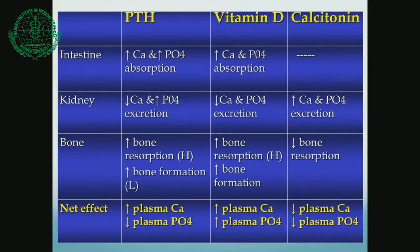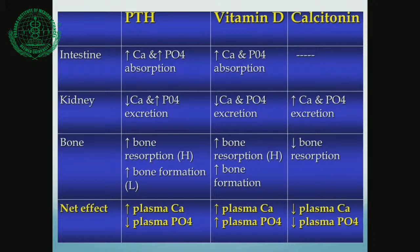Vitamin D increases calcium and phosphorus absorption from the intestine. It also decreases calcium and phosphorus excretion from the kidney, which is different from parathyroid hormone in that PTH selectively increases calcium reabsorption while increasing phosphorus excretion. Vitamin D also acts on the bone, increasing both bone resorption and bone formation, but the action is such that bone formation is more than bone resorption, hence there is no net bone loss. The net effect of vitamin D is it increases plasma calcium and increases plasma phosphorus levels.